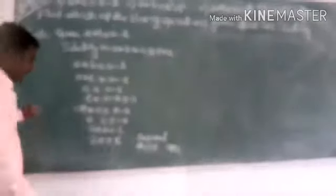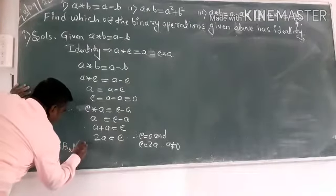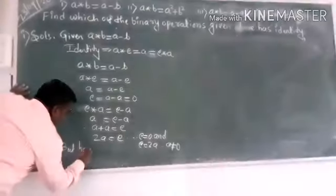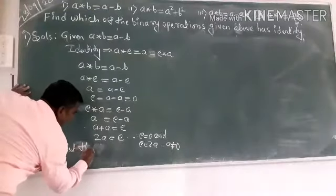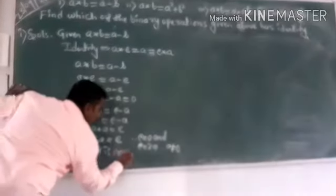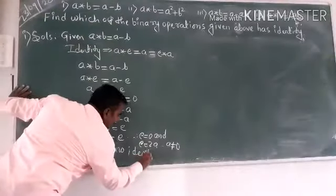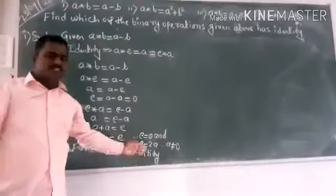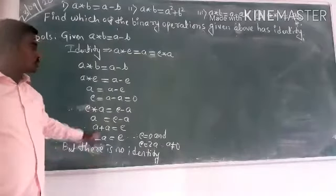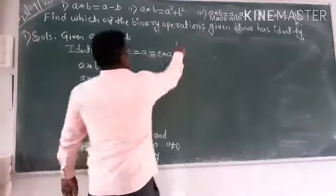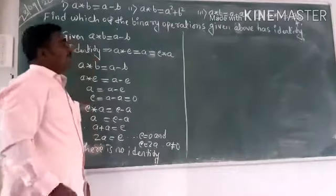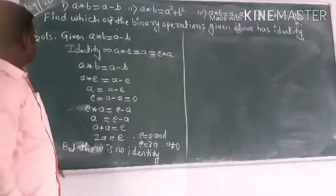Therefore, but as identity, there is no identity because two different elements are there. This is the question they are asking for one mark. Very important factor.